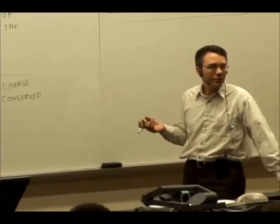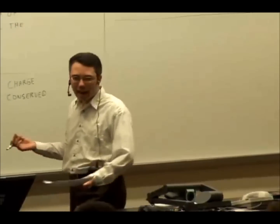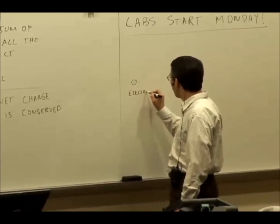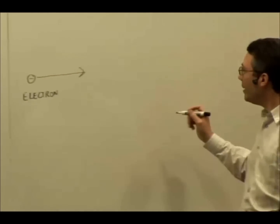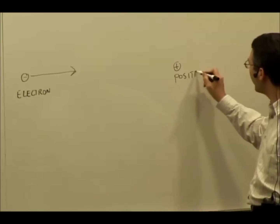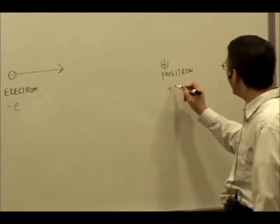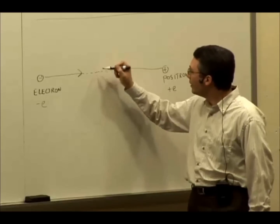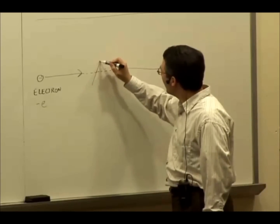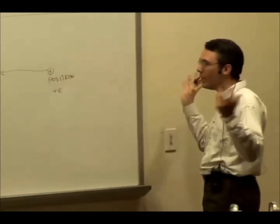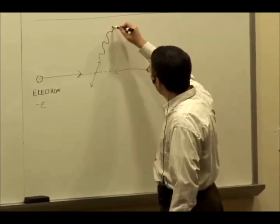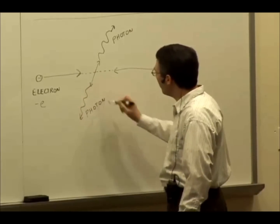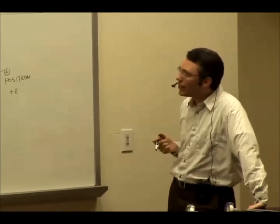You can have individual charged particles being annihilated. For example, in a particle accelerator you have an electron being fired at a positron, which is the antiparticle of an electron. So we have a charge of negative E and a charge of positive E — the same mass of particles fired at each other. If they collide, what often will happen is that the particles themselves will annihilate. You'll no longer have an electron or a positron; instead you'll have two photons being emitted — photons being particles or quanta of light. And photons don't have a charge.